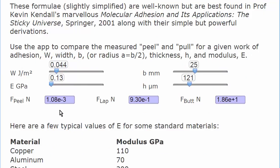And here's the calculation. If I've got a work of adhesion, a typical 44 dynes per centimeter, and a width of 25 millimeters, or an A of 25 millimeters in the butt joint, a modest 0.13 gigapascals for the rubber, and 120 microns thickness...